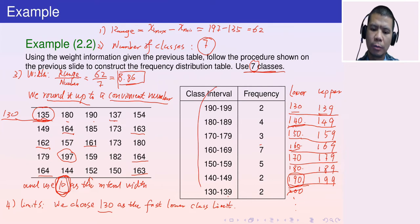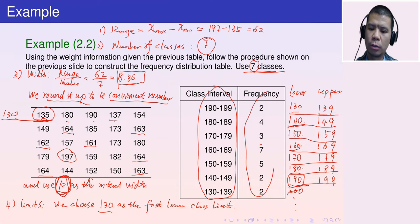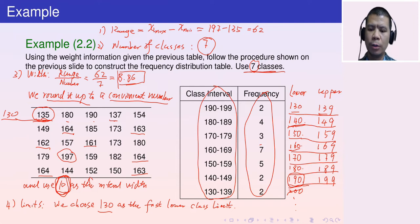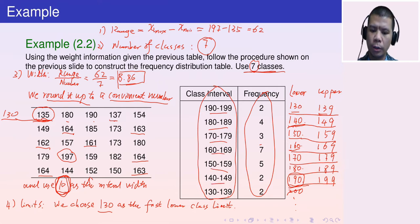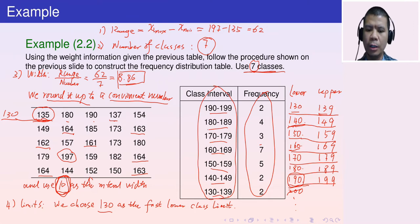In this table the class intervals are listed in decreasing order — 190 to 199, 180 to 189, down to 130 to 139.